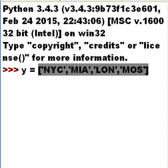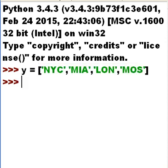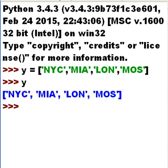So I have one, two, three, four elements in my list. I hit enter. If I hit the letter Y again, you'll see that it worked — I have those elements. The next thing I want to do is loop through that list.